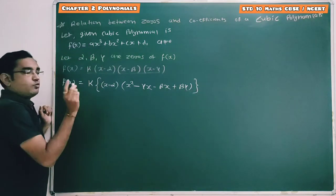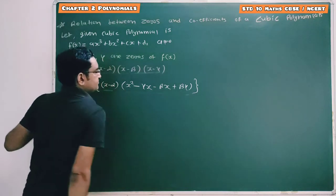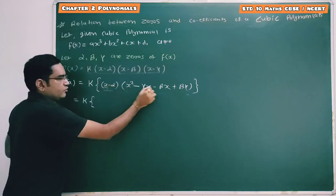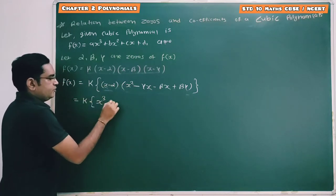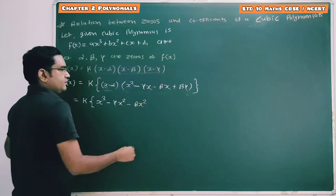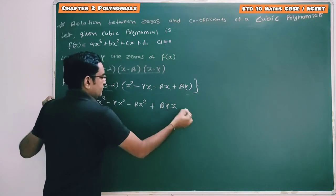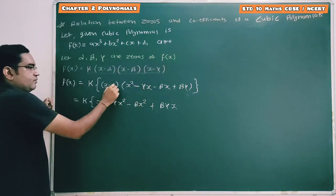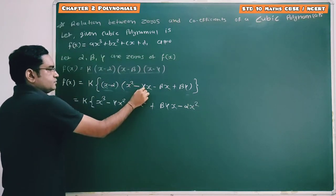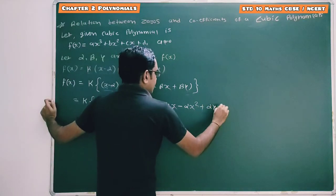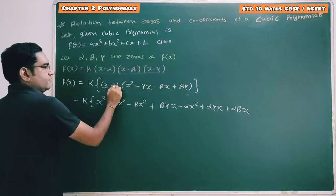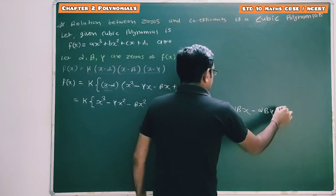Now we will perform expansion of these two terms — x minus alpha and the bracket. So f of x equals k times: x into x square minus gamma x minus beta x plus beta gamma, giving x cube minus gamma x square minus beta x square plus beta gamma x. Then minus alpha into x square gives minus alpha x square, minus alpha into gamma x gives minus alpha gamma x, minus alpha into negative beta gives plus alpha beta x, and minus alpha into minus beta gamma gives minus alpha beta gamma.